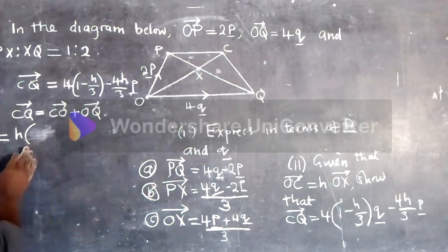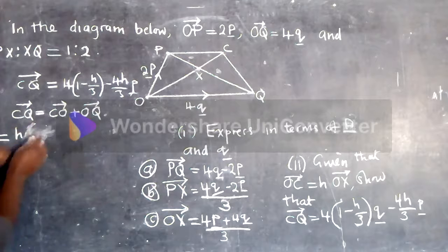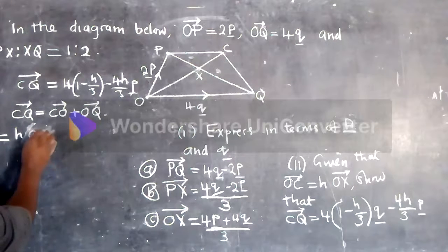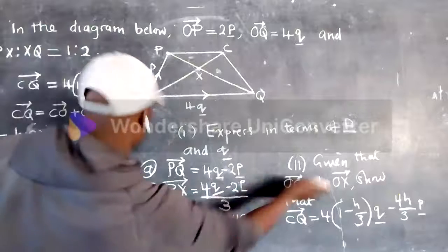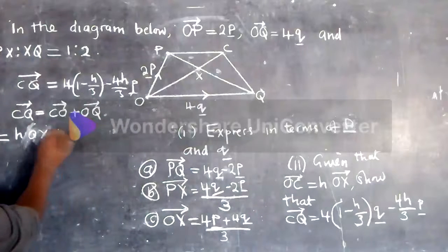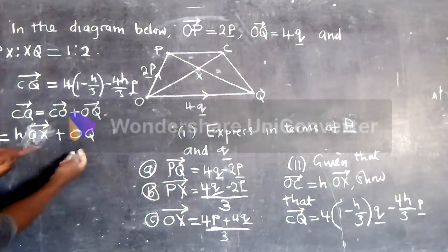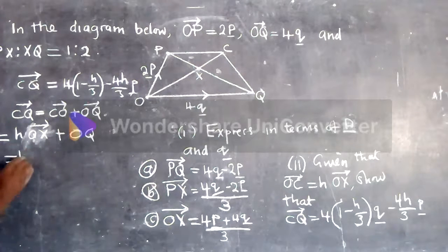We put OX here, so we have H times OX plus OQ. This is how it's supposed to be.